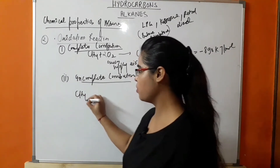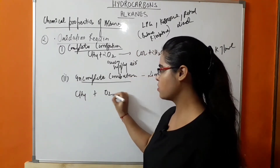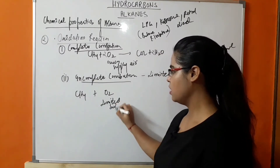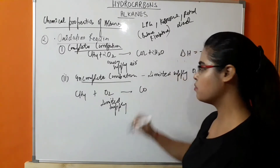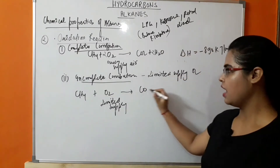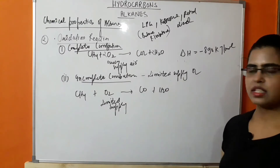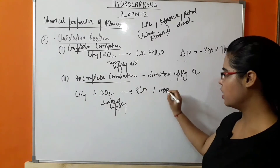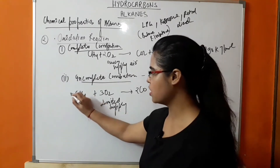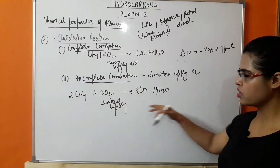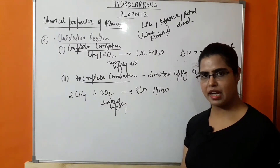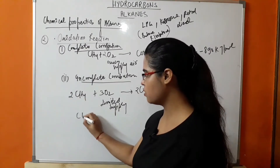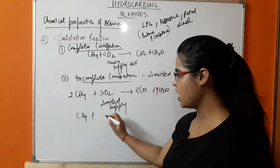In incomplete combustion, when CH4 reacts with oxygen present in limited supply, there will be formation of carbon monoxide and water. Balancing the reaction: the number of oxygen molecules is 3, there are 2 CH4 molecules, giving the balanced reaction: 2CH4 + 3O2 → 2CO + 4H2O. You have to represent the balanced reaction every time.